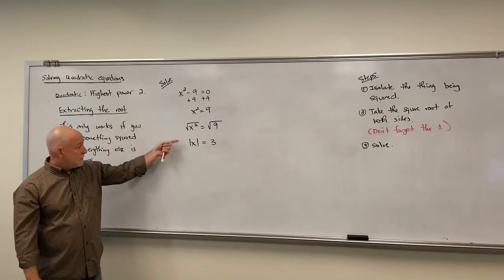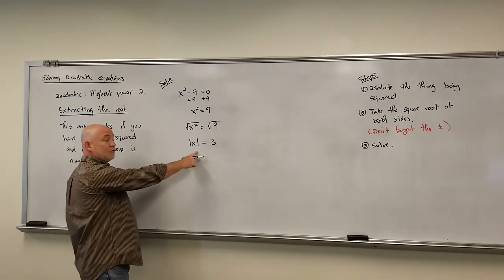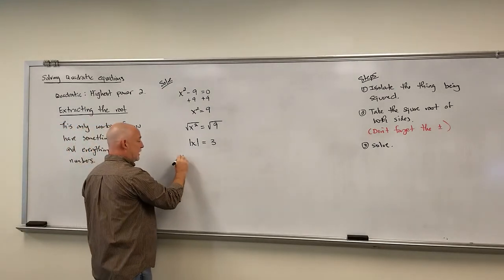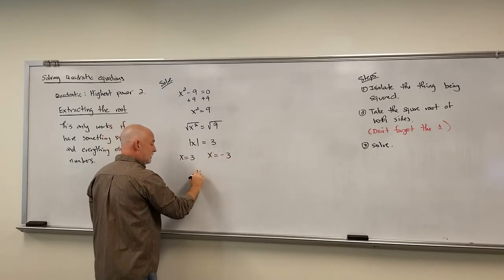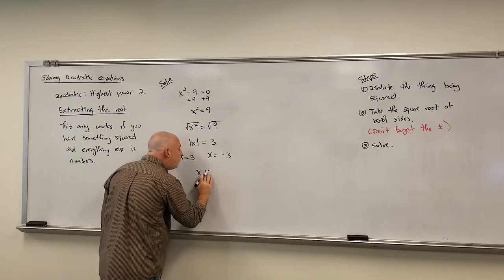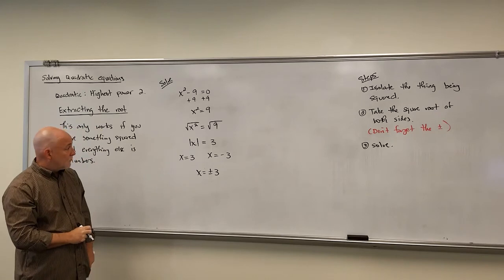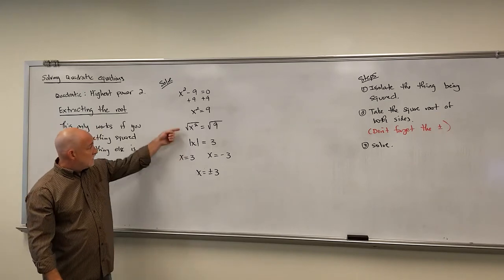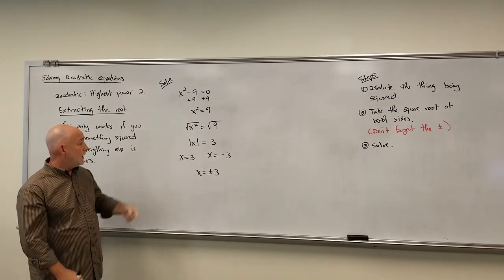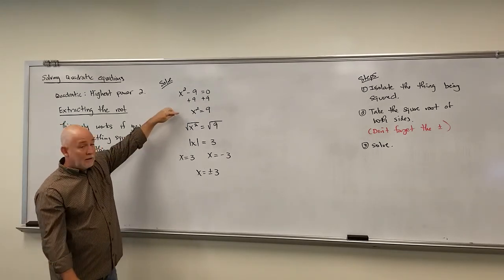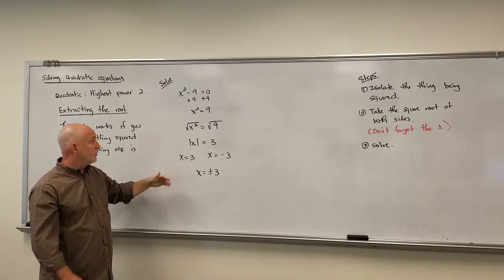This is a step most textbooks skip. Since we've solved absolute value equations, we know the answers are positive 3 and negative 3, which we write as ±3. So the plus or minus doesn't come from the radical directly — it comes from an absolute value that we almost never write explicitly.